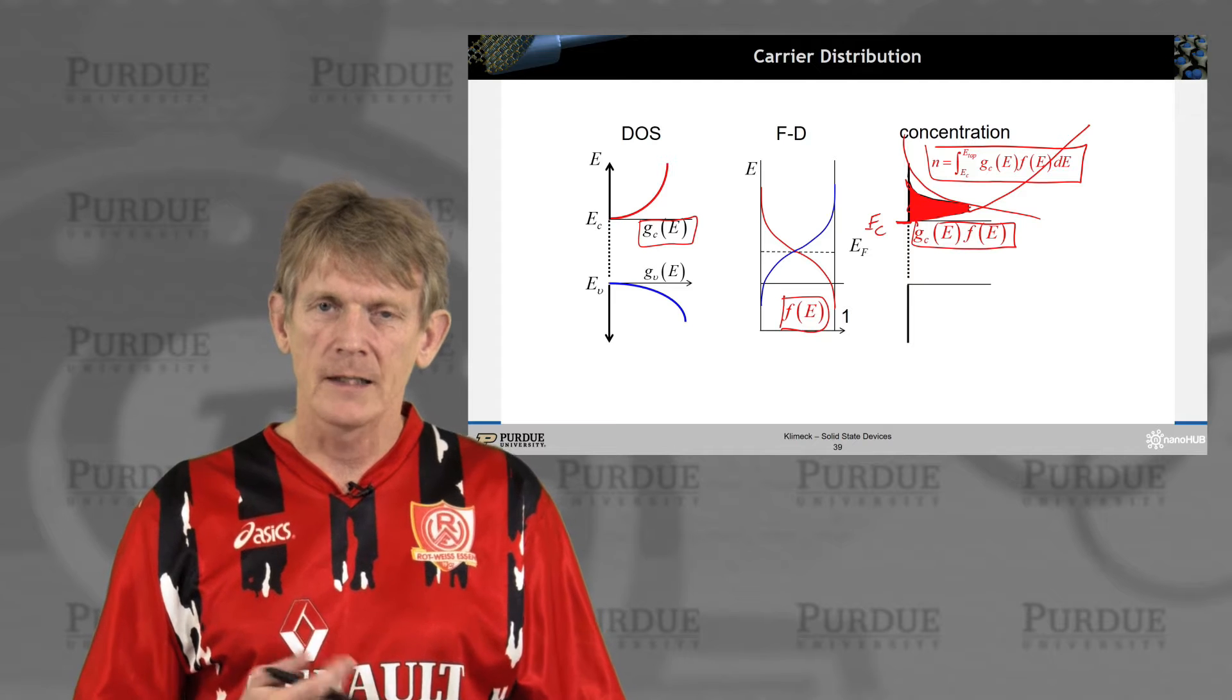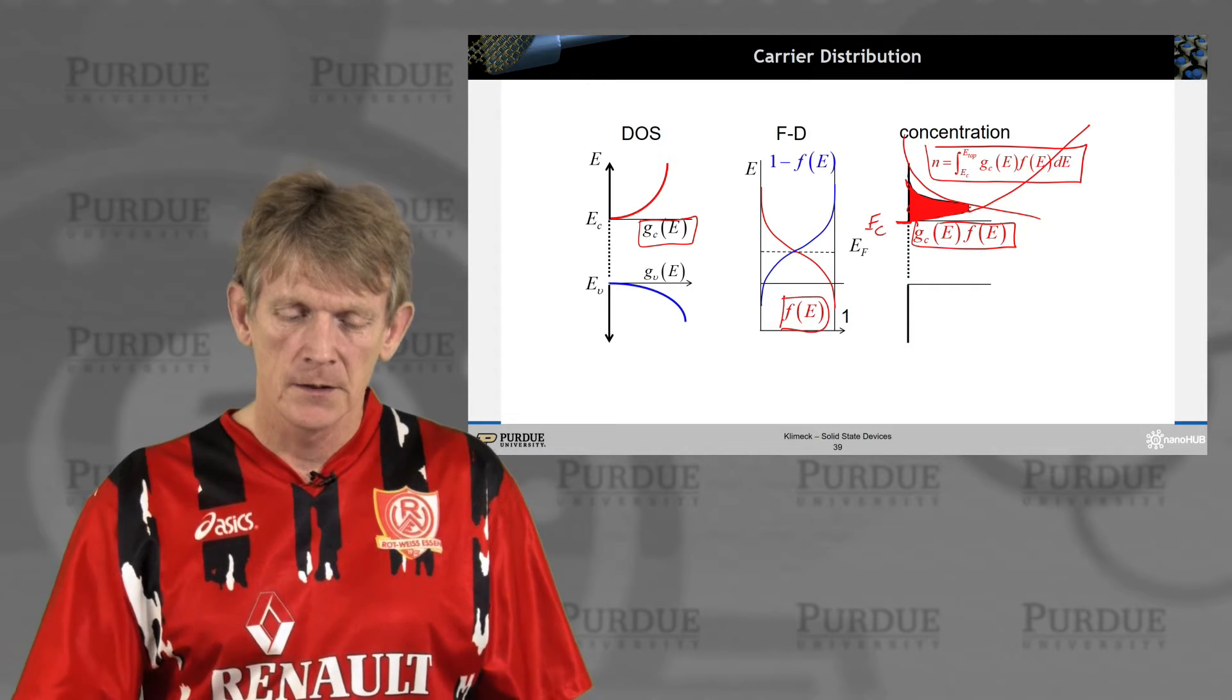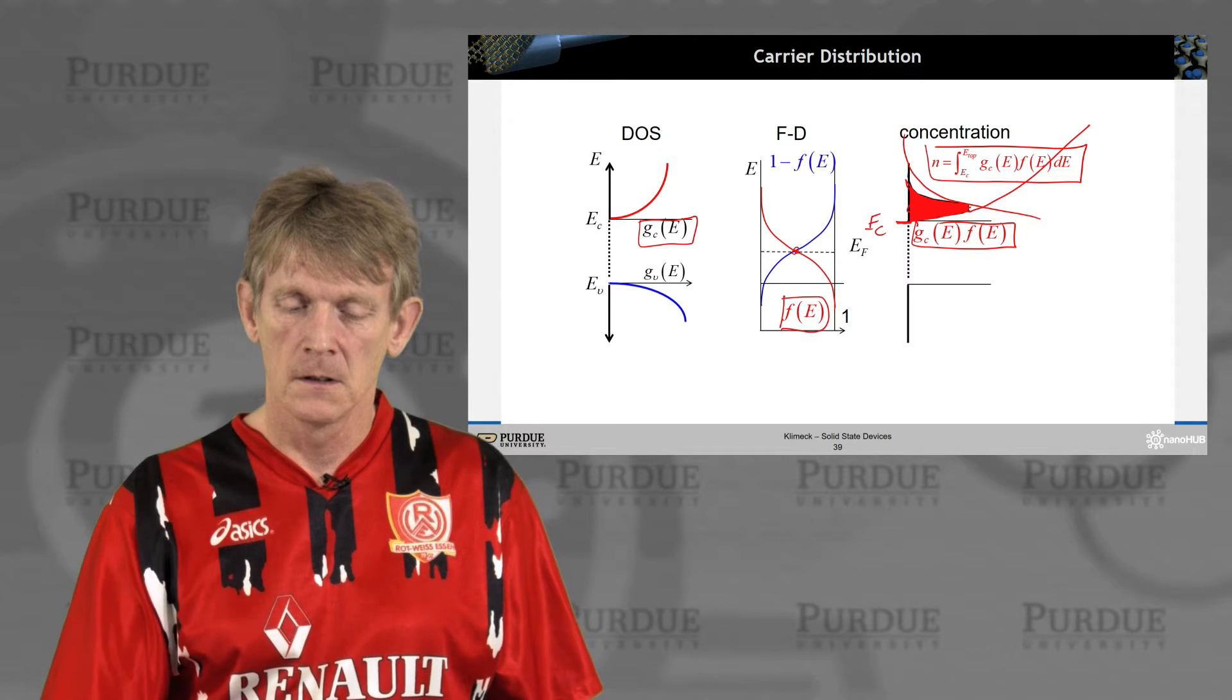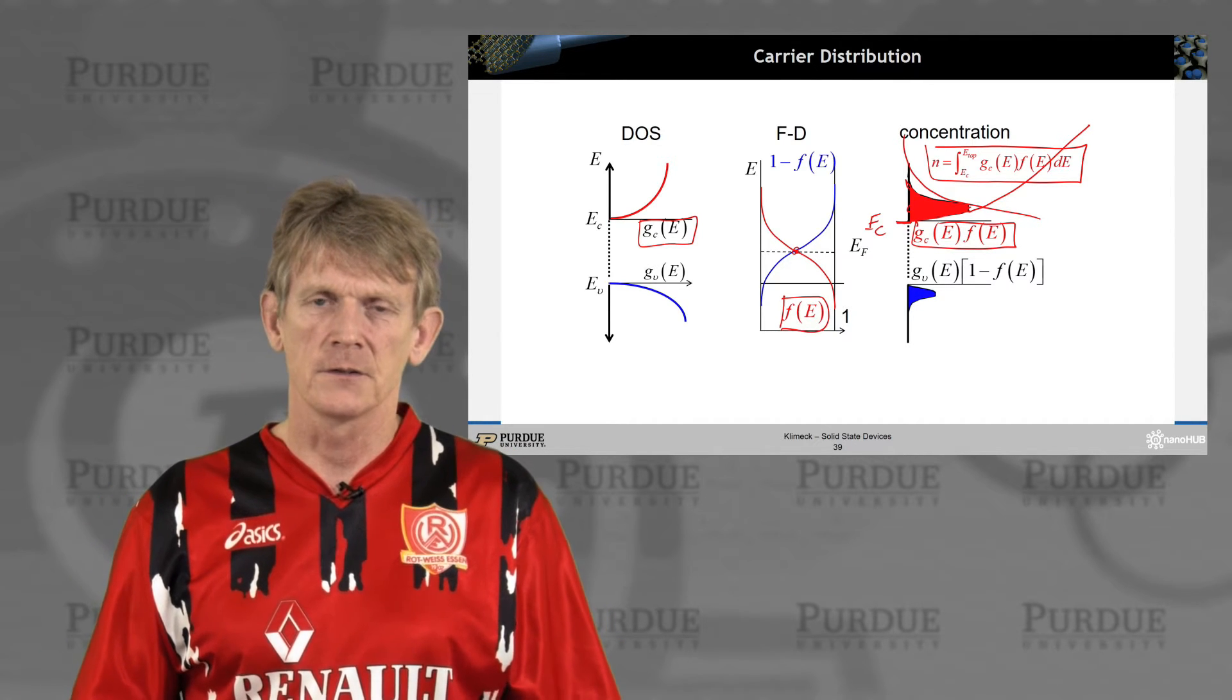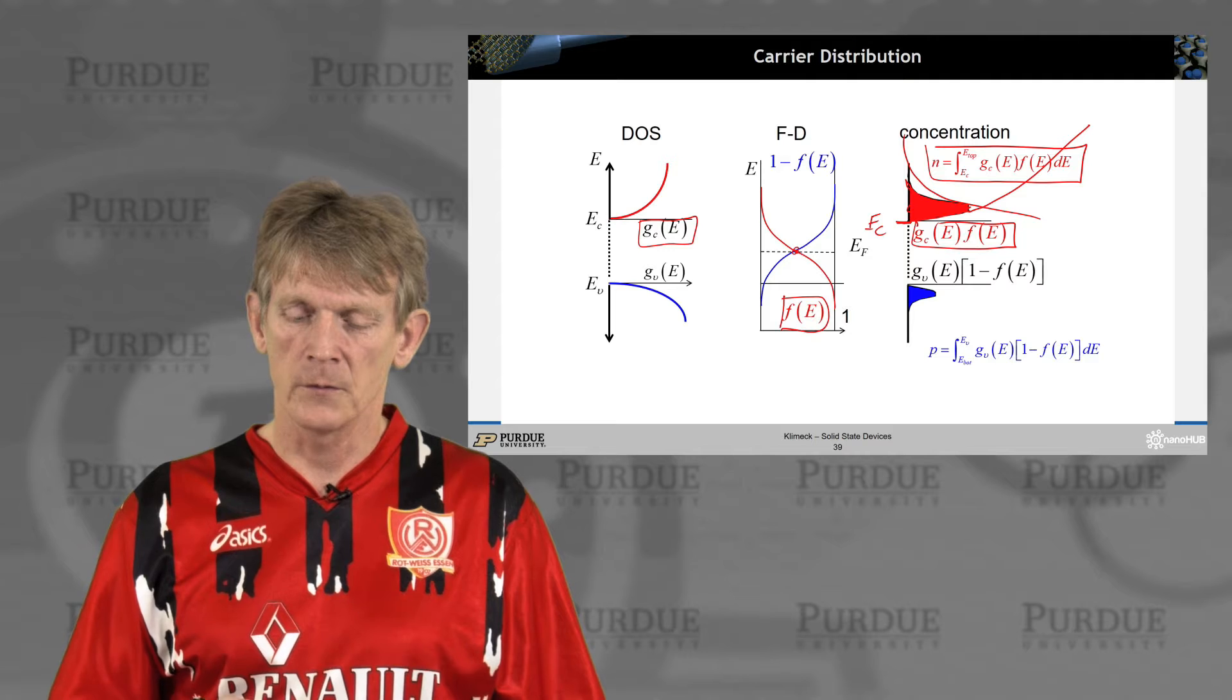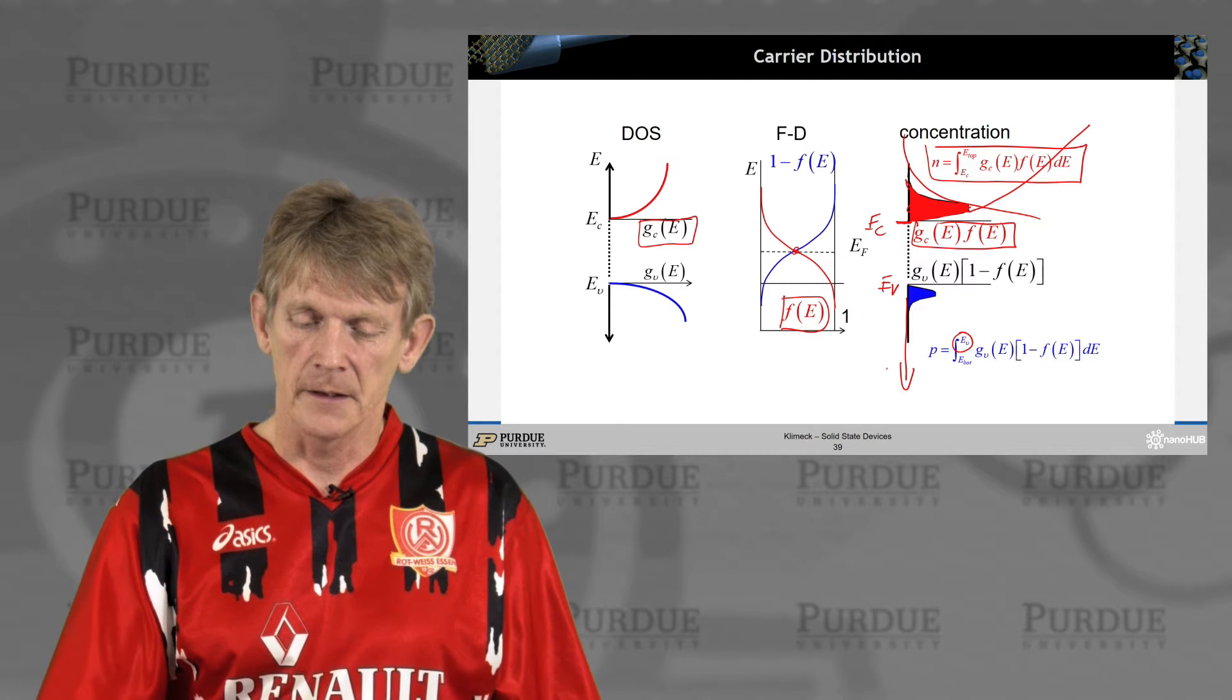Now, for holes, you do kind of the opposite. Holes' occupancy would be 1 minus F, as plotted here. These functions meet exactly at the Fermi level, where they're both 1 half. And you get a similarly distributed carrier concentration for the holes. Same approach, and you would calculate the hole distribution on the total number of holes from the top of the valence band down to the bottom, where the band ends.